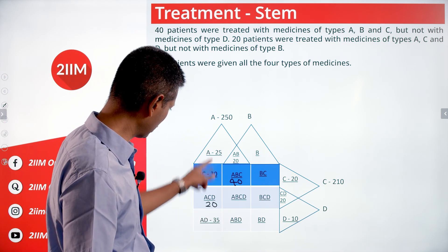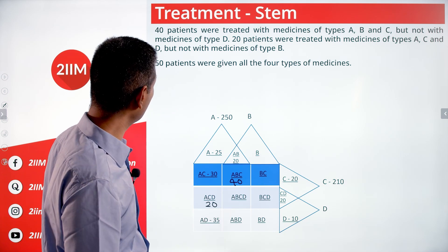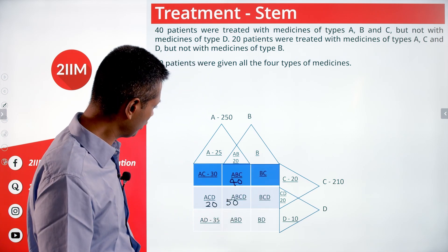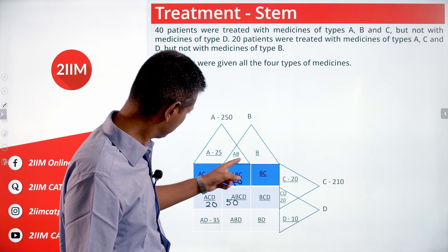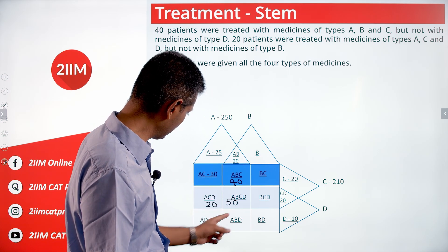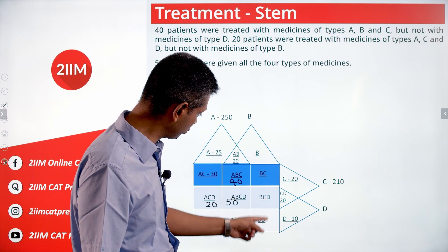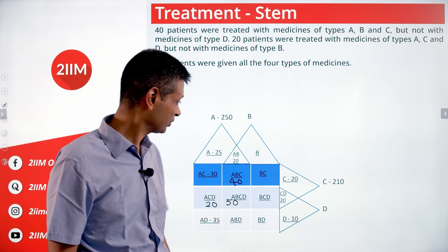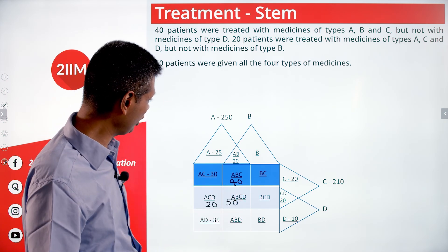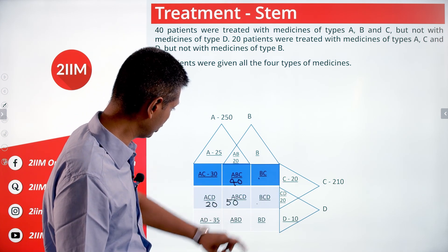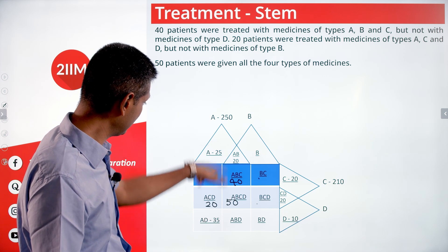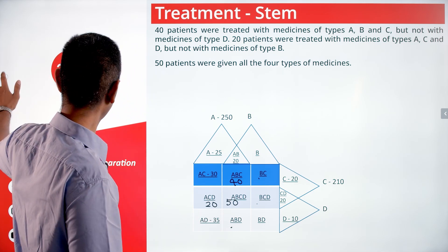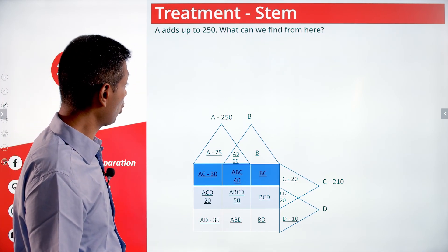50 were given all four types of medicines, so A∩B∩C∩D = 50. With most regions filled, only about five remain. Since the total is 500 we can find the fifth once four are known. Looking at the A total of 250 — we have most of A's regions filled — and C totals 210 with two gaps remaining. We can make inferences from these totals.